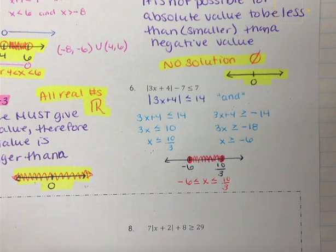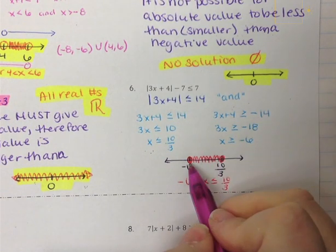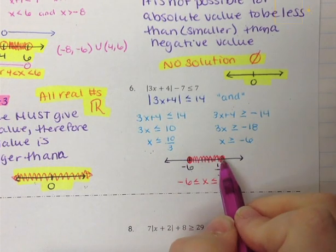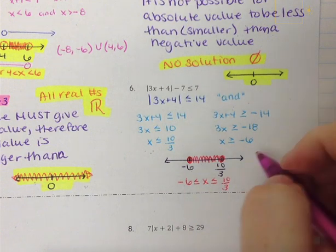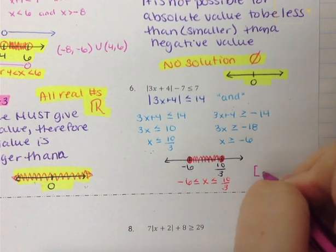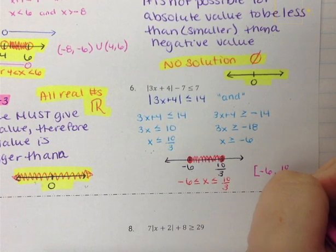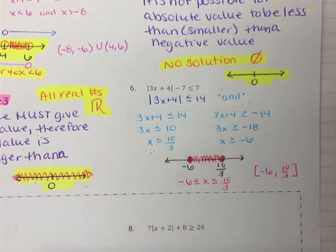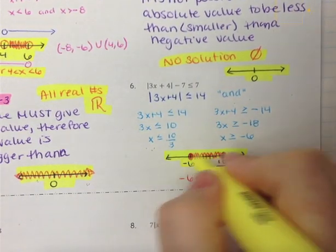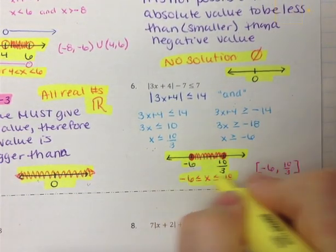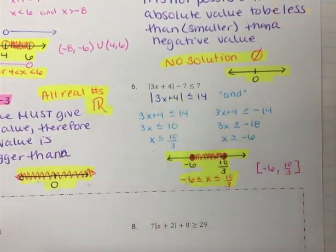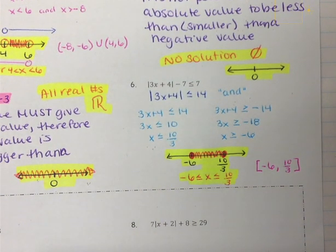Don't forget interval notation. Because we have a starting point and a stopping point, it's everything in between. We have closed bracket negative 6 comma 10 over 3 closed bracket — that's our interval notation. Don't forget to highlight your solution, including the number line as well as the written-out expression.